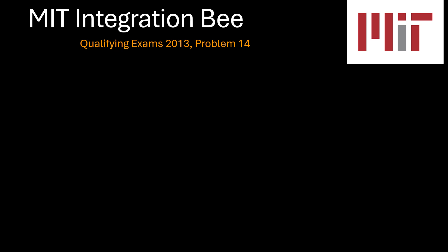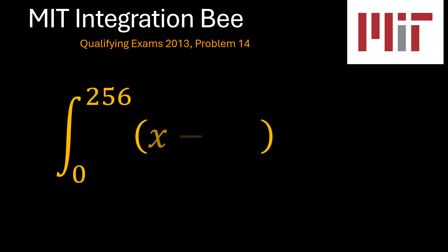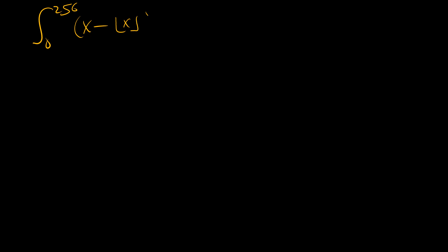We are on to problem number 14 of the MIT integration B qualifying exams 2013, which is a definite integral from x equals 0 to x equals 256 of x minus the floor function of x, all squared. So let's see how we can solve this. The integral from x equals 0 to x equals 256 of x minus the floor function of x, squared.